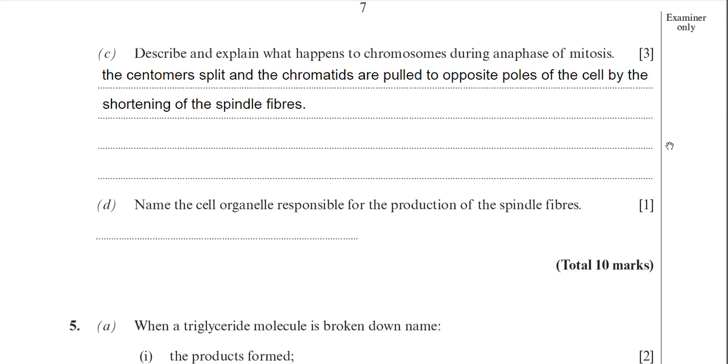A straightforward answer then. The centromeres split and the chromatids are pulled to opposite poles of the cell by the shortening of the spindle fibres.